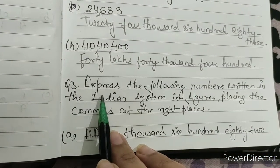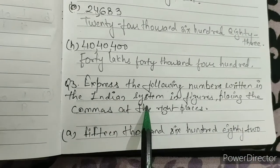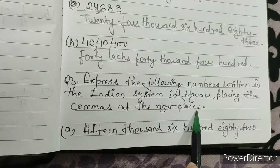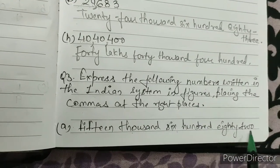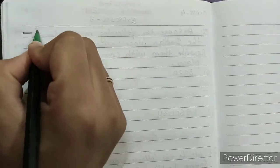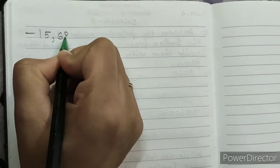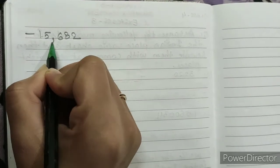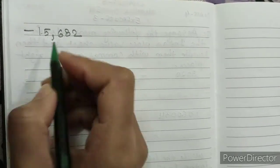Question number 3: express the following numbers written in the Indian system in figures, placing the commas at the right places. Part a) fifteen thousand six hundred and eighty-two. We will write it as 15,682 — ones, tens, hundreds, then comma, then 15. So the answer is 15,682.